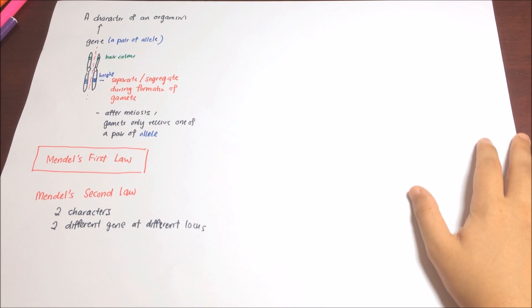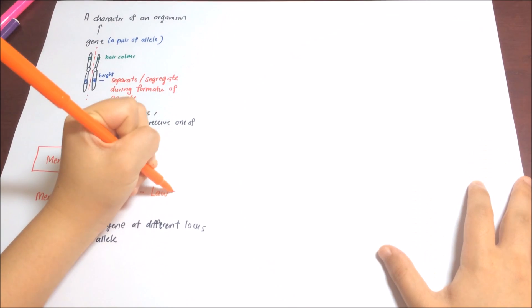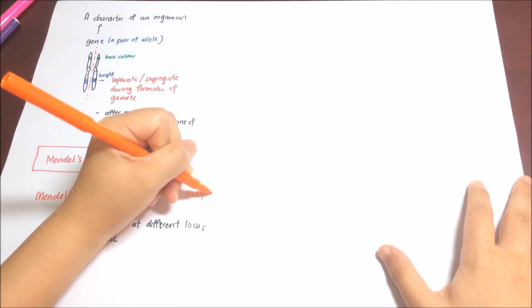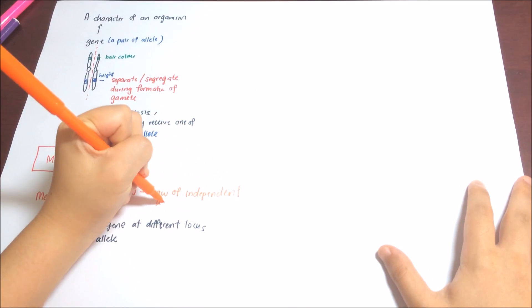And during the formation of gamete, these two pairs of alleles will separate independently of each other. And this law is also known as law of independent assortment.